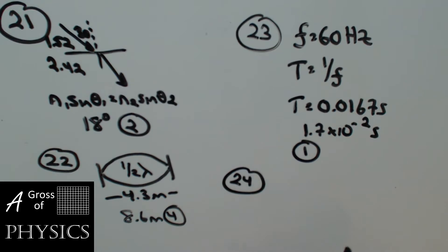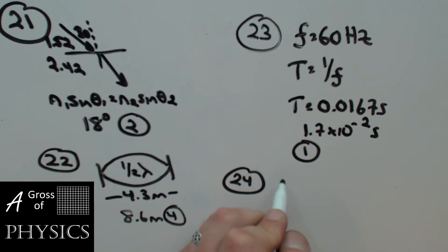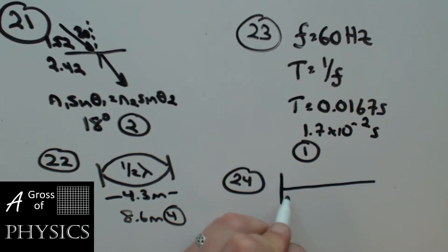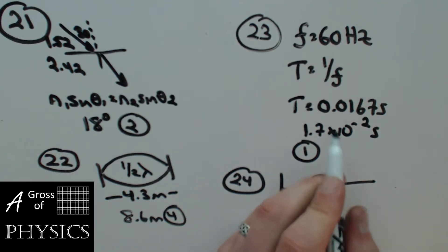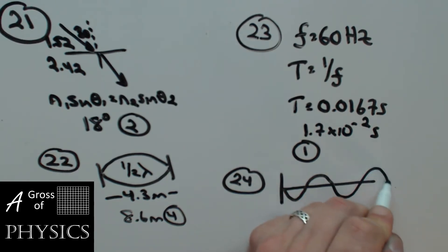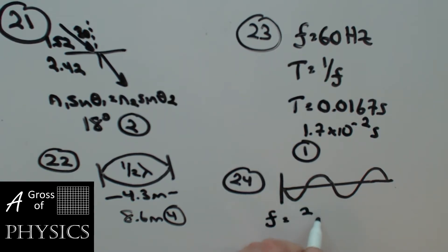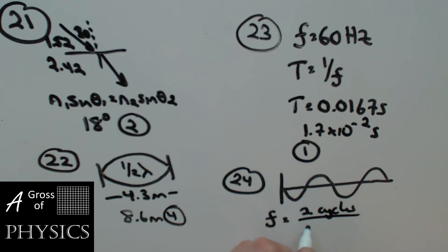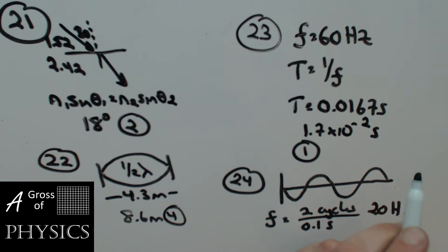Number 24: a graph shows displacement versus time as a wave travels through a medium. What's the frequency? We look for how many waveforms we see — it looks like two waveforms in 0.1 seconds. Frequency is cycles over time: 2 divided by 0.1 is 20 hertz. Choice two.